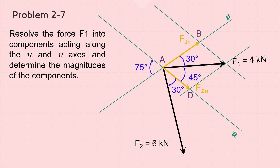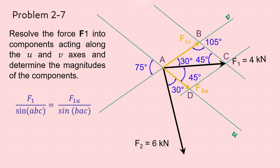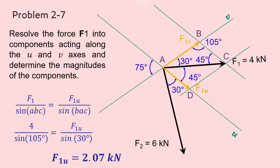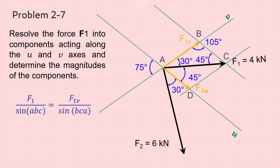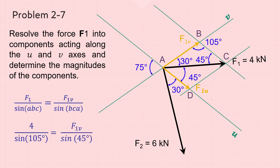To find the magnitude of these components, work with triangle ABC, where BC equals AD and the measure of angle BCA equals the measure of angle DAC, equal to 45 degrees. So the measure of angle ABC equals 105 degrees. Applying the sine law: F1 divided by sine ABC equals F1U divided by sine BAC. Substituting known values: 4 divided by sine 105 degrees equals F1U divided by sine 30. Solving for F1U results in F1U equals 2.07 kN. Applying the sine law again to find F1V: 4 divided by sine 105 degrees equals F1V divided by sine 45 degrees. Solving for F1V results in F1V equals 2.93 kN.